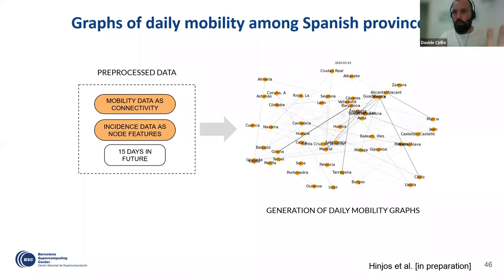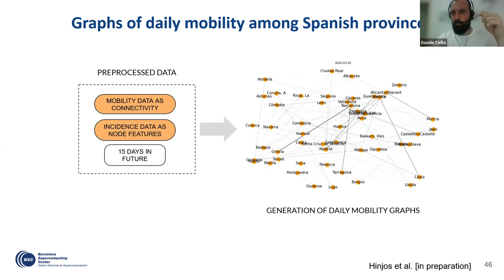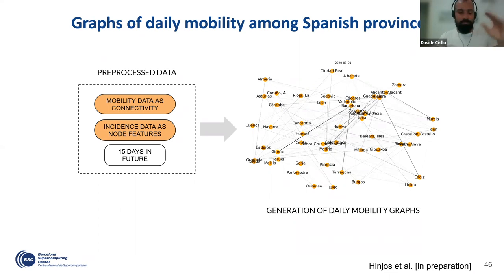We thought of studying this also from a geographic point of view — it's interesting to see how the graph actually maps geographically, because there are things that are really interesting in terms of mobility: highways and roads where you have to pass if you want to go from one place to another, which are going to be much more traveled.